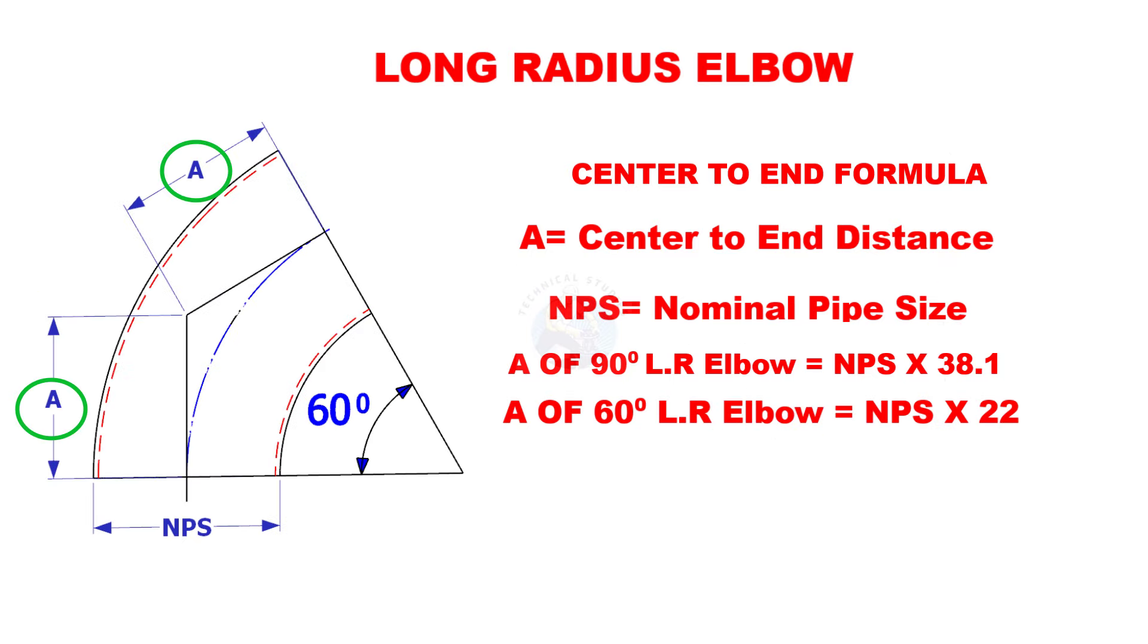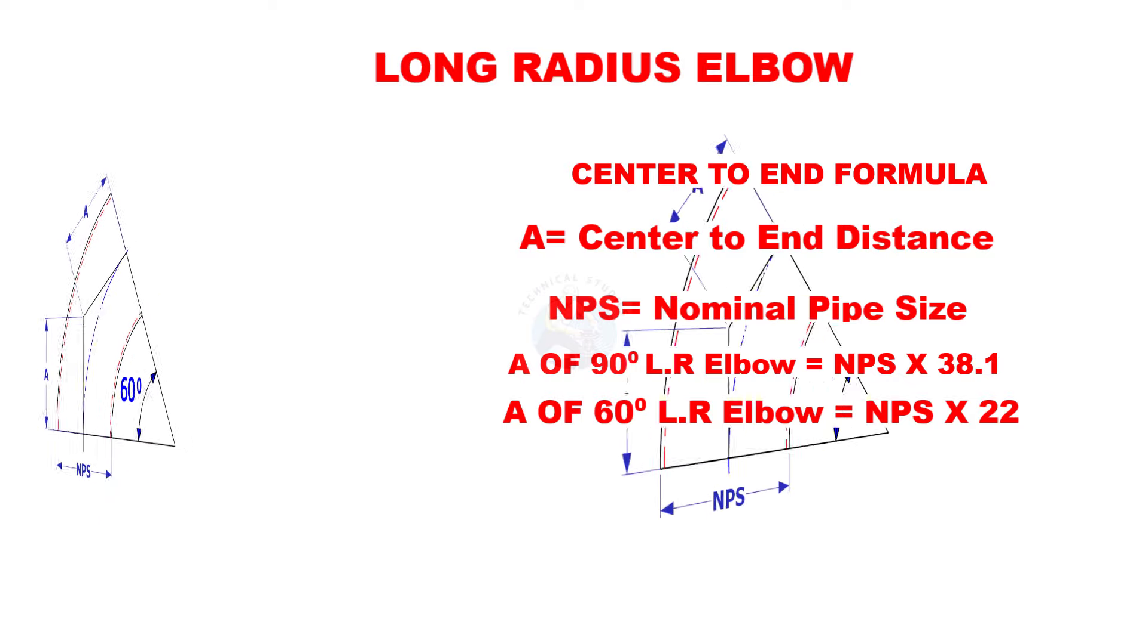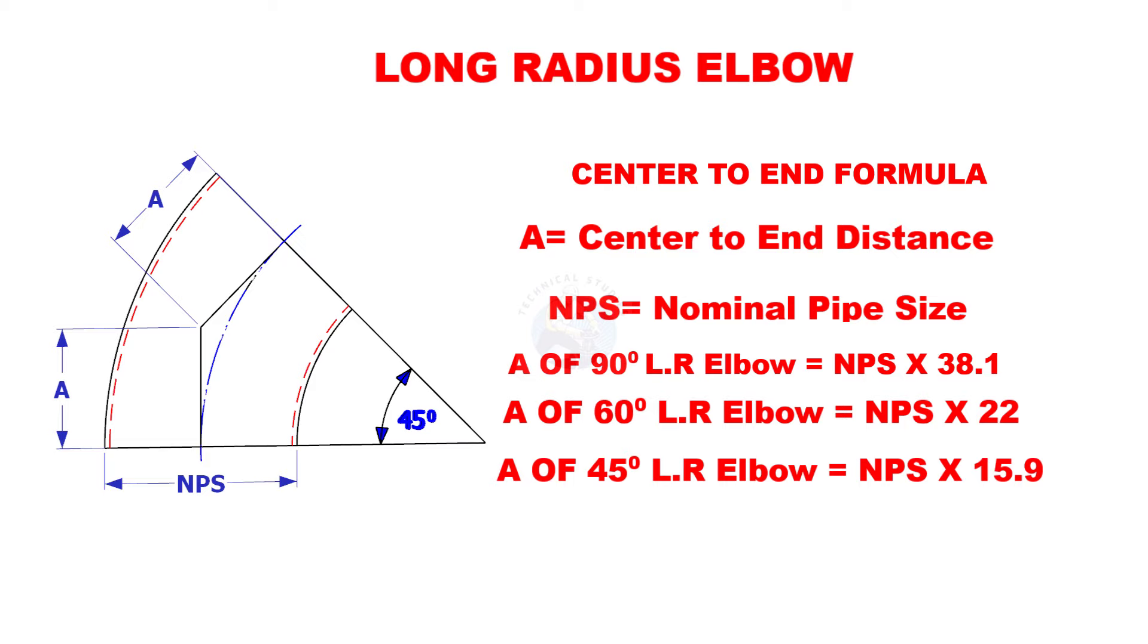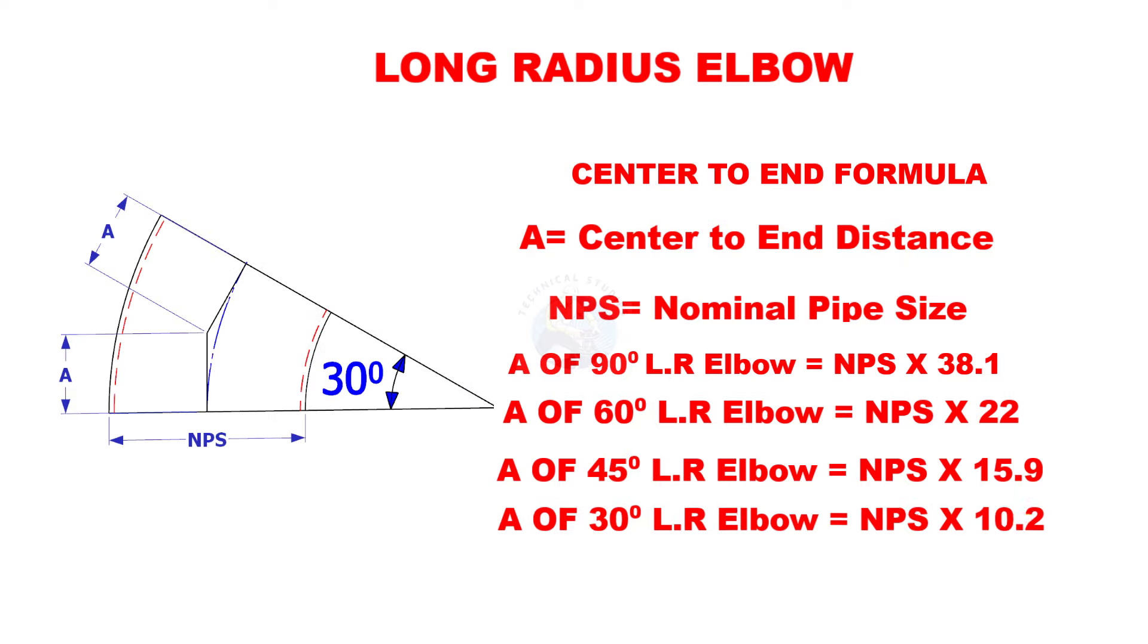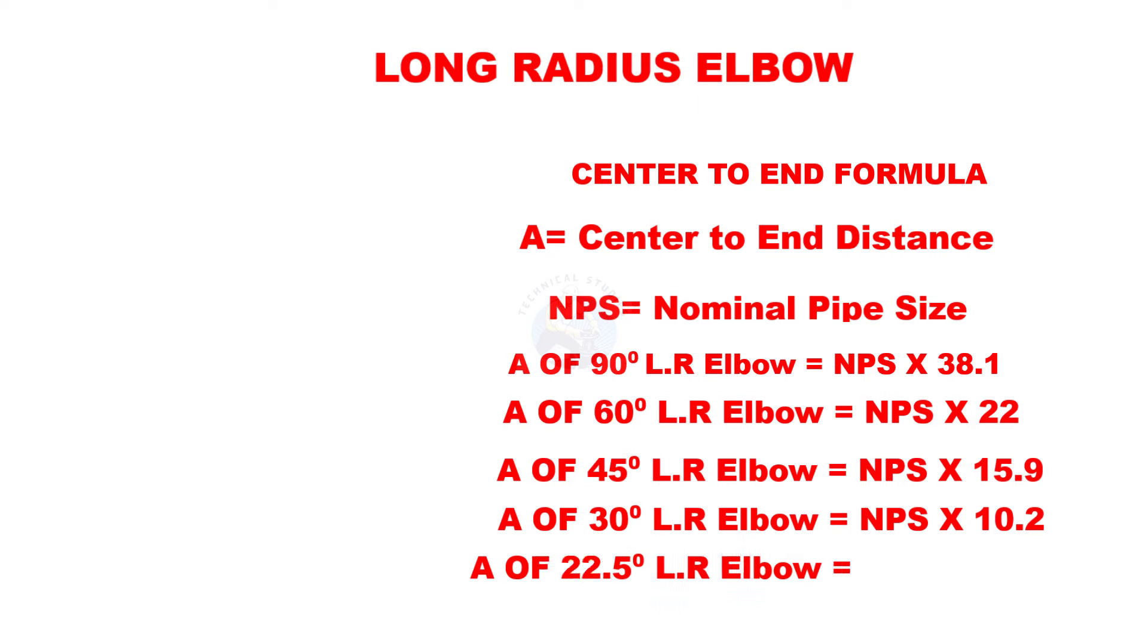A of 60 degree long radius elbow is nominal pipe size multiplied by 22. A of 45 degree long radius elbow is nominal pipe size multiplied by 15.9. A of 30 degree long radius elbow is nominal pipe size multiplied by 10.2. If the degree is 22.5 multiply the nominal size by 7.57.